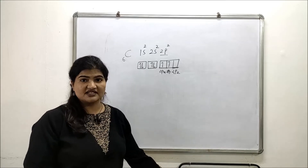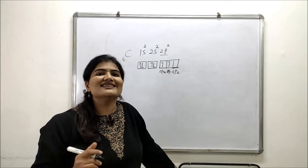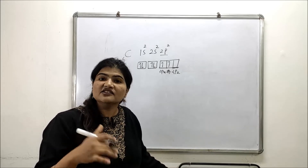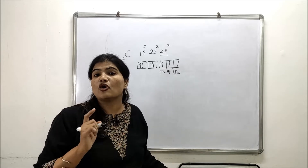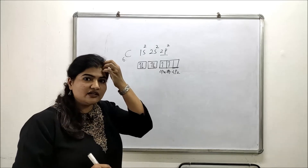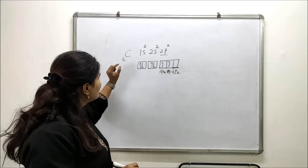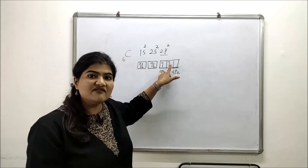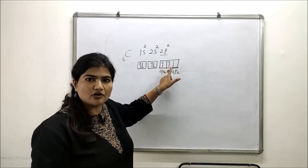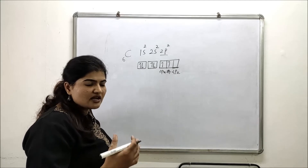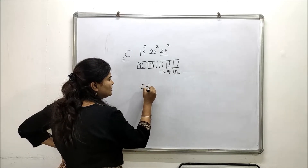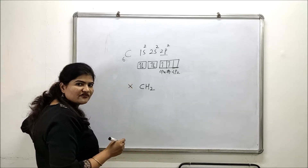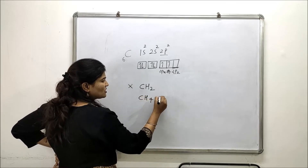As discussed in a previous video about chemical bond formation, half-filled orbitals participate in bond formation. So carbon has only two half-filled orbitals — 2px and 2py — meaning only two bonds can be formed. This would predict CH2 as the basic carbon-hydrogen molecule, but in reality the stable molecule is CH4.